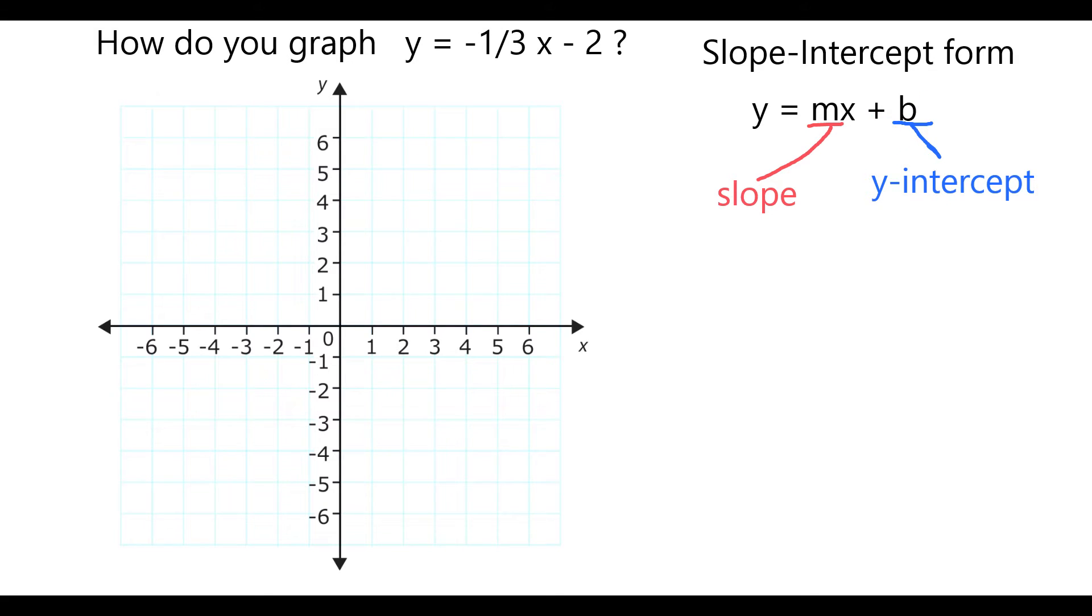Which means in this particular case, my slope will be negative one-third, because it's in the place of the m in the slope-intercept form equation, and my b, my y-intercept, is going to be negative 2, because we know that subtracting 2 is the same as adding a negative 2.